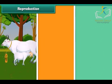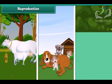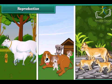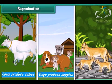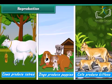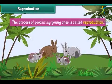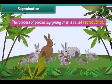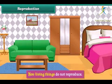All living things produce young ones like them. For example, cows produce calves, dogs produce puppies, and cats produce kittens. The process of producing young ones is called reproduction. Non-living things do not reproduce.